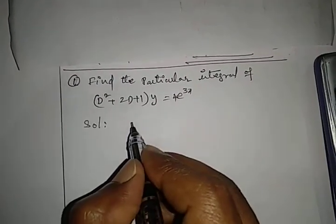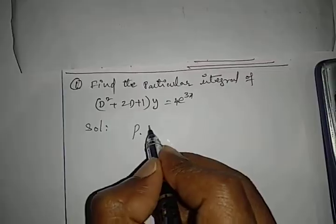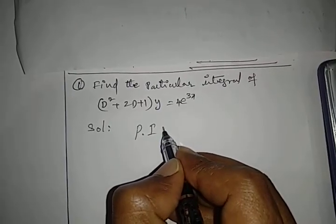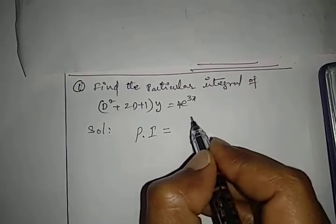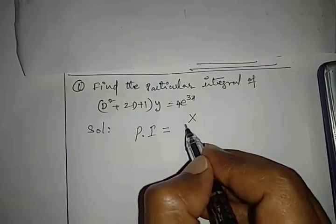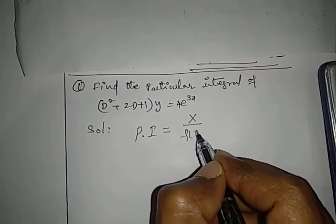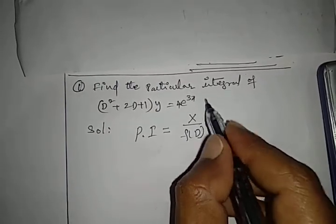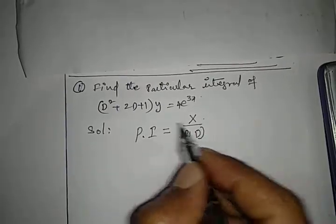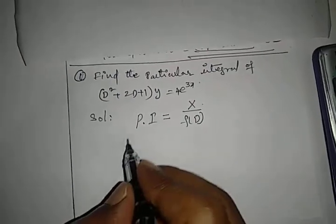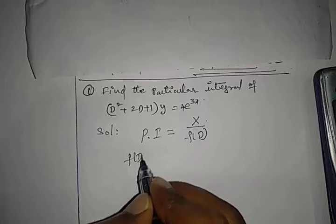Solution: Here we have to find the particular integral, simply called PI. The formula is PI = x/f(D), where x means the RHS value and f(D) means the LHS value.